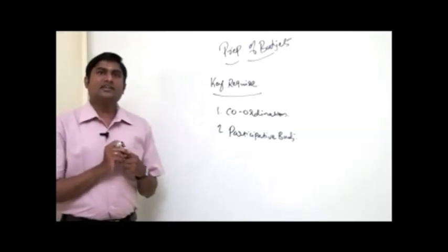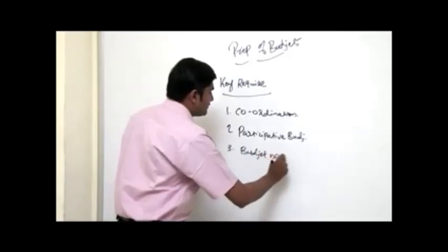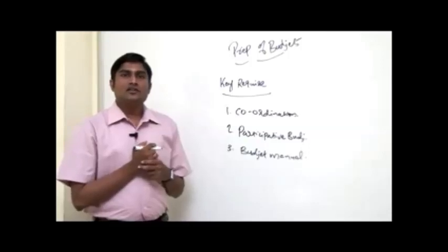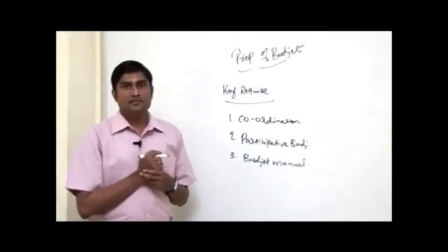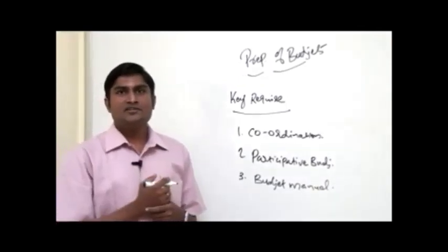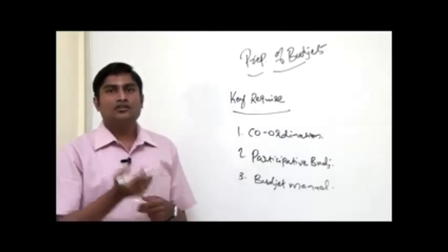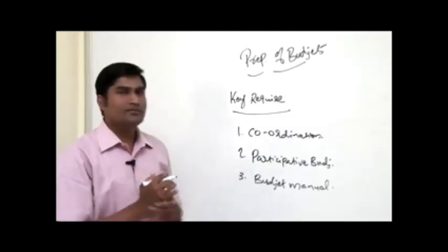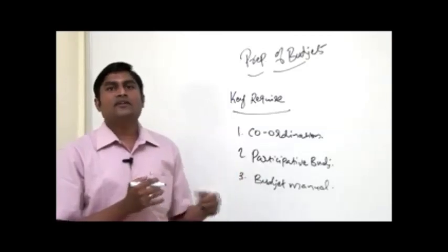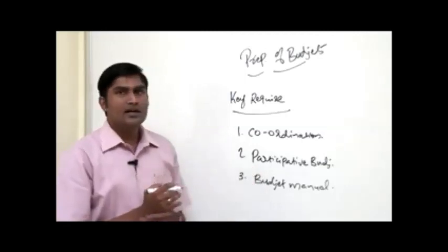The next key requirement is a budget manual. A budget manual is a book which keeps records regarding the basic elements present in budget preparation — who are the key persons concerned with preparation of budgets, who are concerned with the actual achievement of these objectives, and all key figures. The budget manual includes all relevant information or data required to prepare a budget.